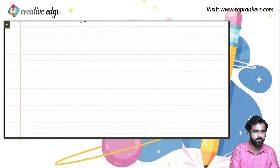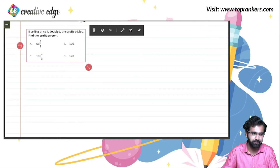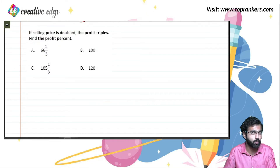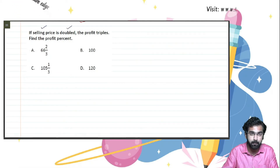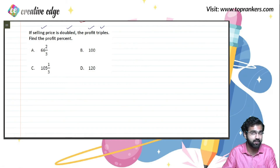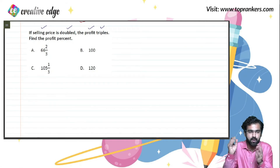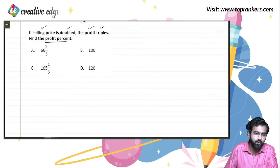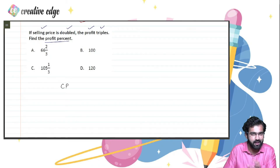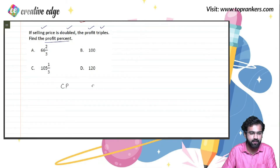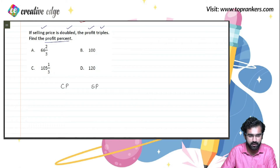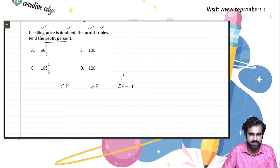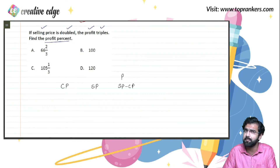Let's understand profit and loss through one more example. What are we given in this question? Read the language very carefully: if the selling price is doubled, the profit triples. We are ultimately asked to evaluate the profit percentage. I would have dealt with cost price CP and selling price SP. The profit earlier would have been selling price minus cost price. But when you double the selling price, the new selling price is two times the previous selling price, and the profit gets tripled — meaning the new profit is three times the earlier profit.